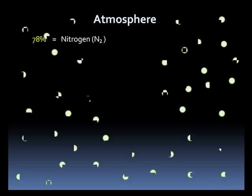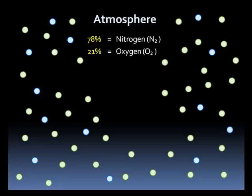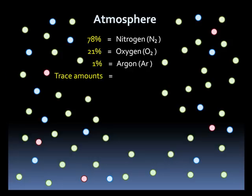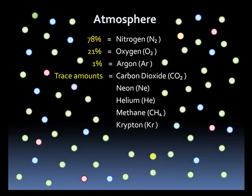The atmosphere is composed of several gases, with nitrogen making up the bulk at 78%. Next is oxygen at 21%. After that comes argon at 1%. And then there are several trace gases, which account for much less than 1%. These include carbon dioxide, neon, helium, methane, krypton, and hydrogen.